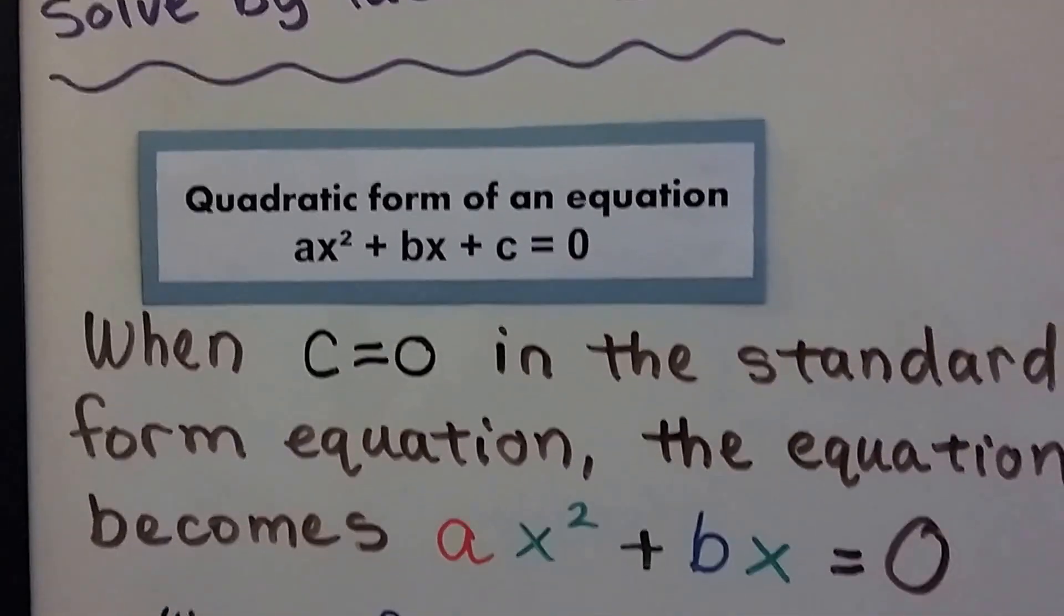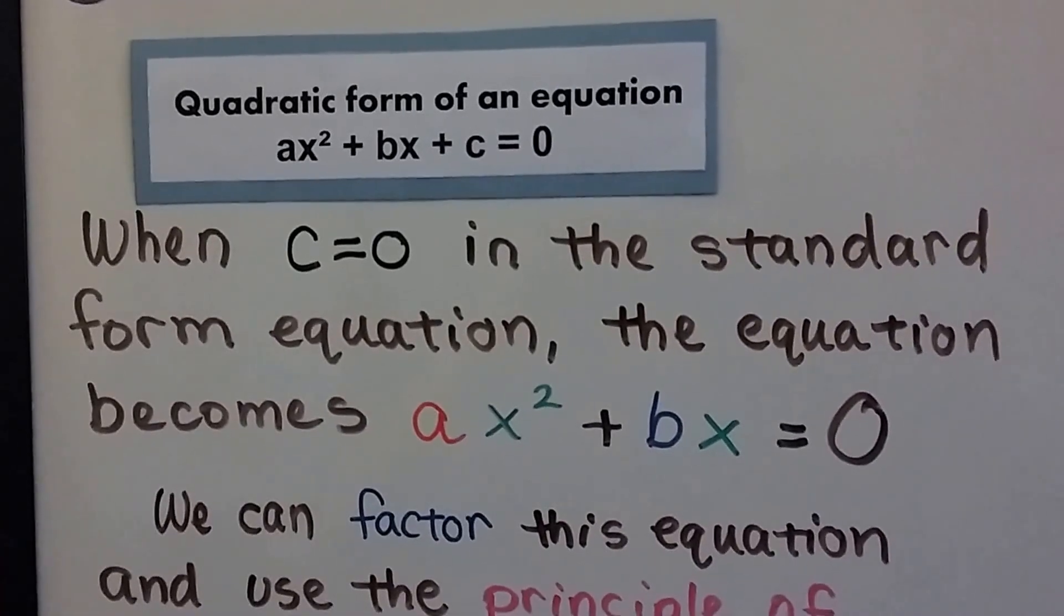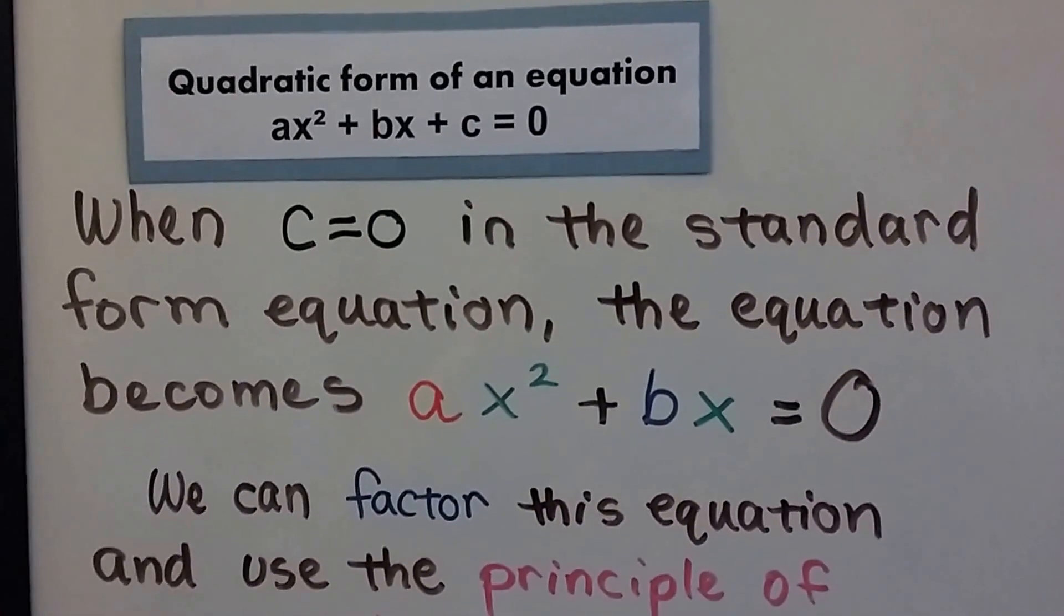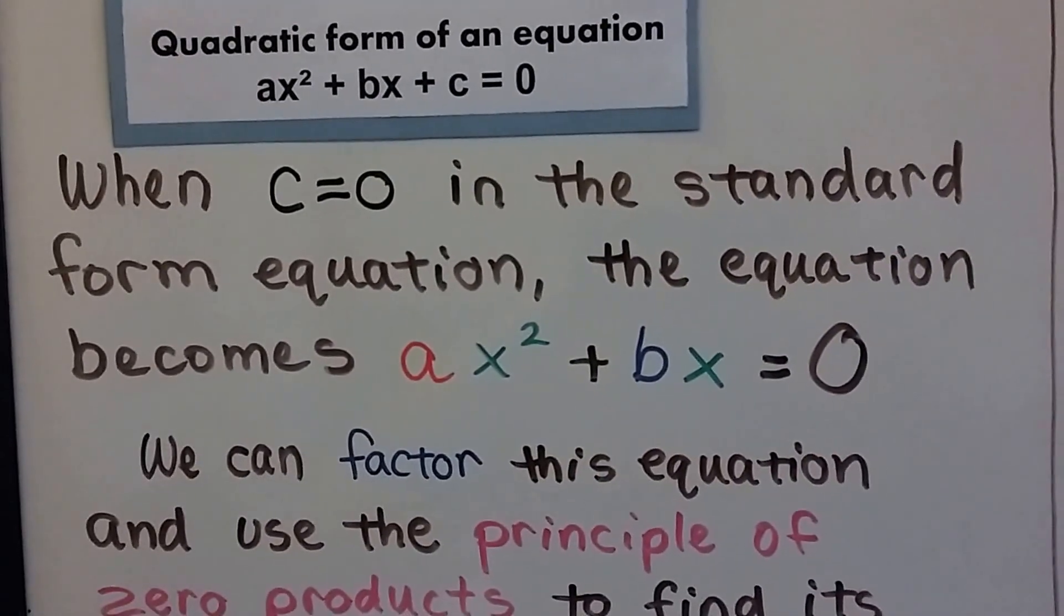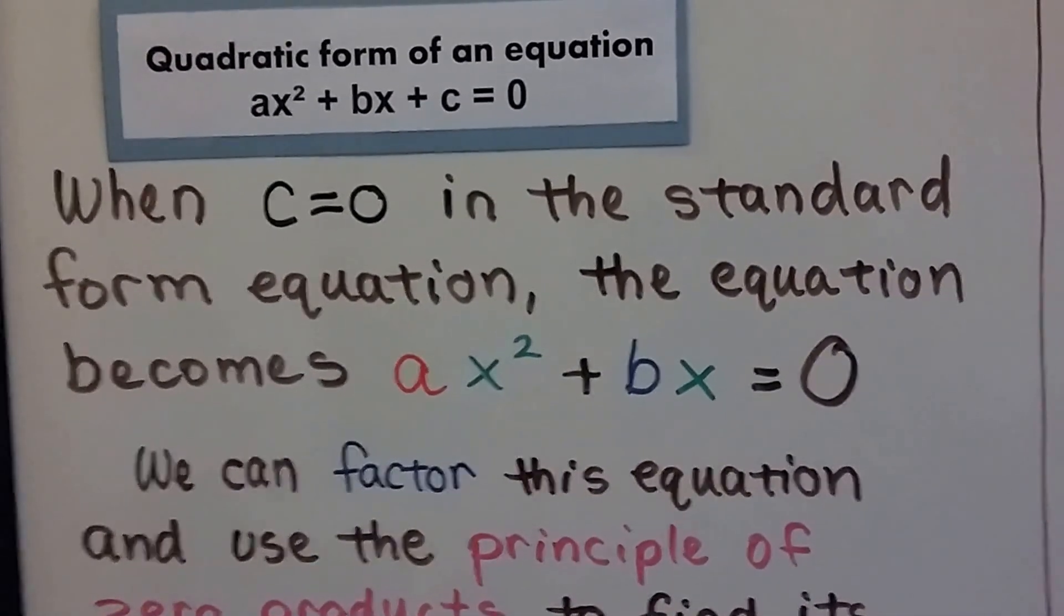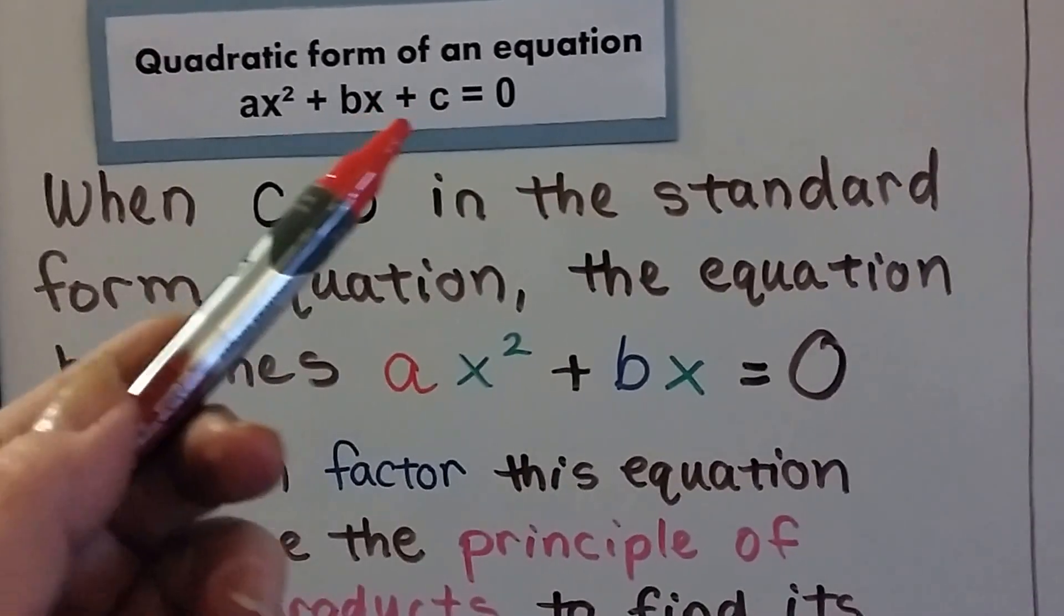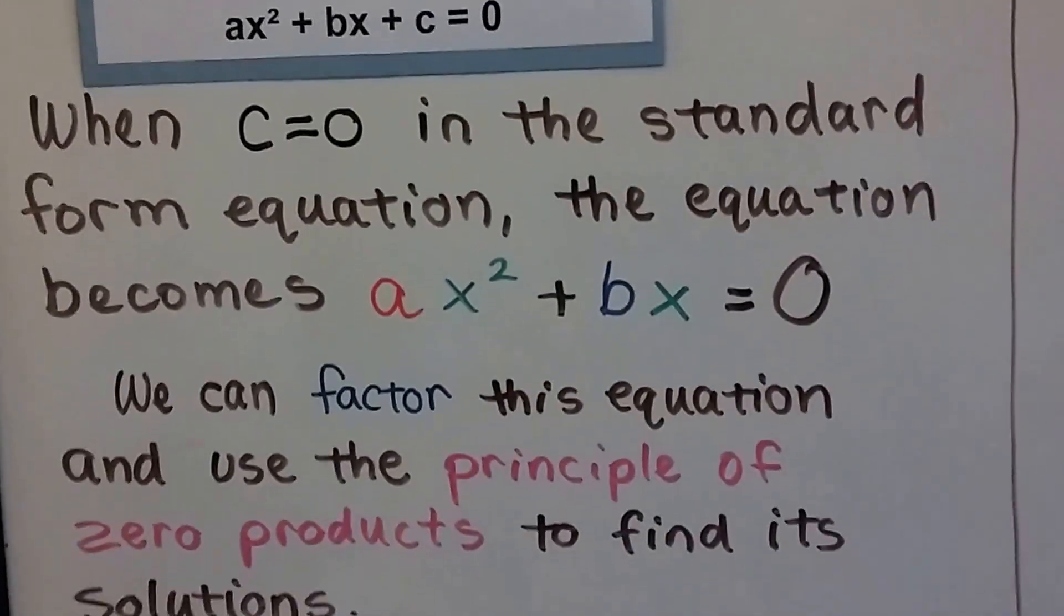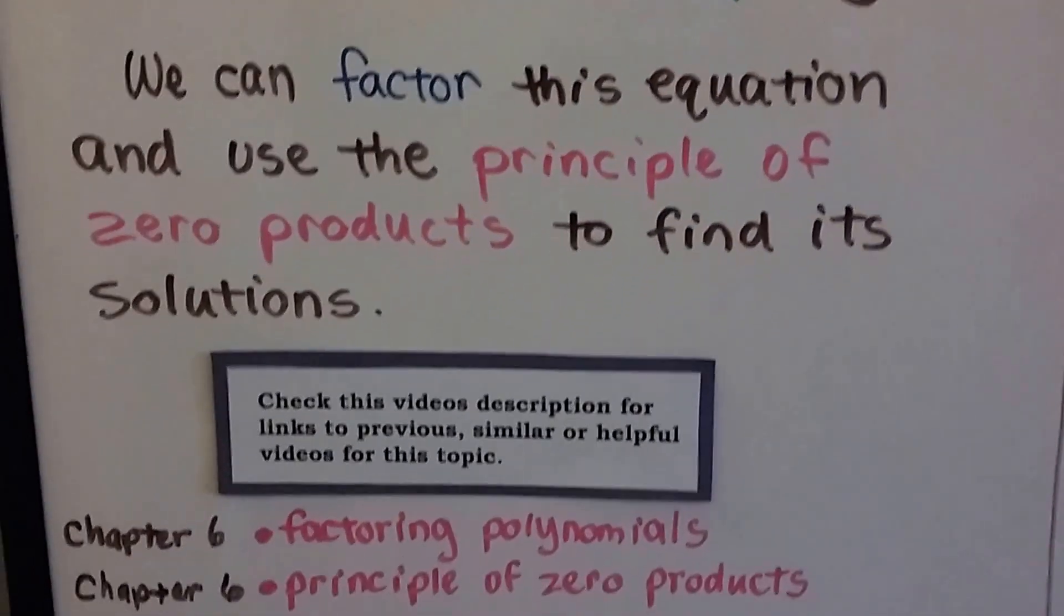The quadratic form of an equation is ax squared plus bx plus c equals zero. But when that c is equal to zero itself, the equation becomes ax squared plus bx. If that c is equal to zero, we don't need to waste our pen writing it. We can factor this equation and use the principle of zero products to find its solutions.